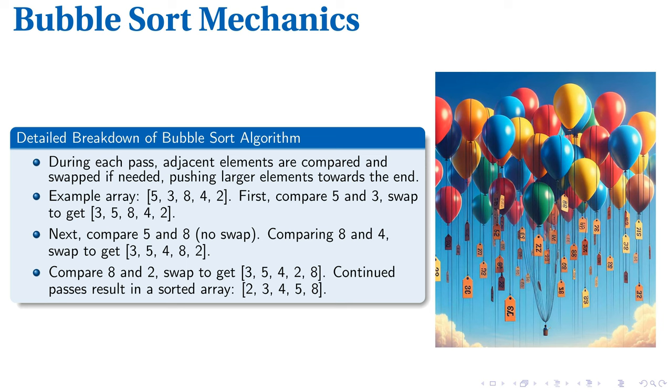Think of bubble sort as an organizer, carefully comparing and swapping items to nail the right arrangement. To illustrate, let's take the unsorted array 5, 3, 8, 4, 2. The algorithm starts by inspecting the first two elements, 5 and 3. Since 5 is larger, they swap places making it 3, 5, 8, 4, 2.